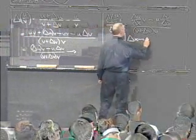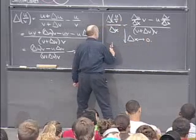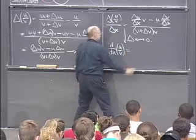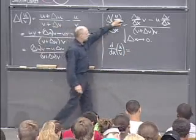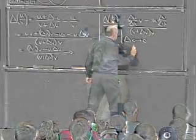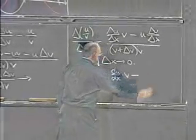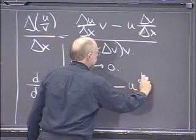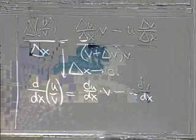As delta x goes to 0, I get, by definition, the derivative of u divided by v. And on the right-hand side, well, this is the derivative du dx, right? Times v. And then u times, and here it's the derivative dv dx.